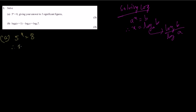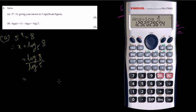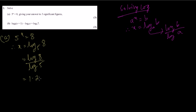So the first thing: therefore x equals log base 5 of 8. Then we have to write this step. Some people skip this step and do it directly in the calculator — you will lose one mark. Remember, this is three marks. So log 8 divided by log 5 equals 1.2920. Answer: x equals 1.29.